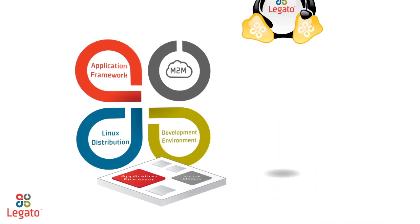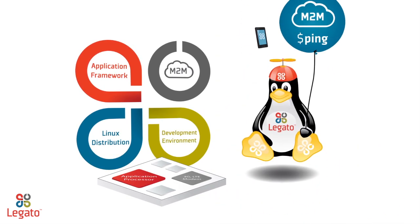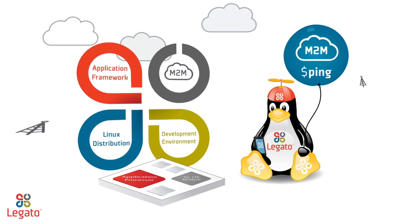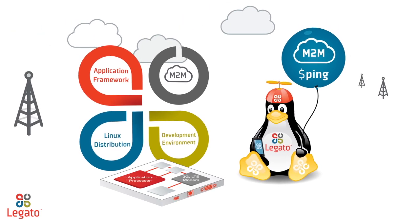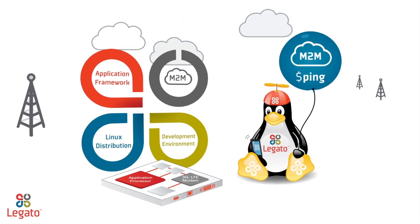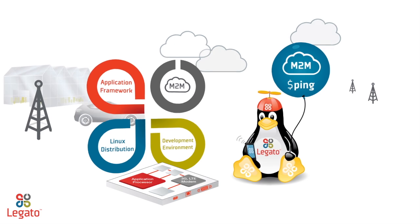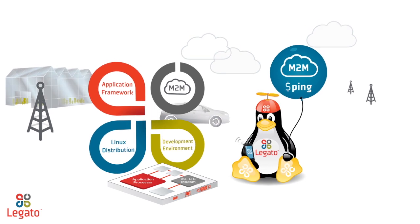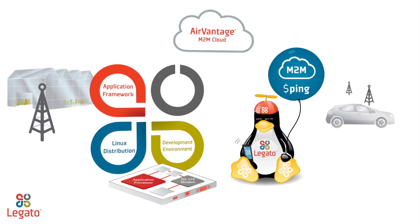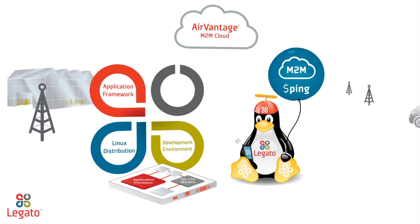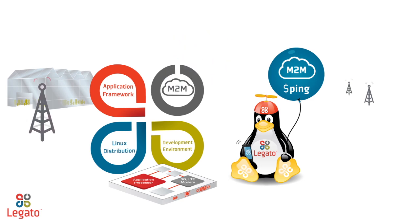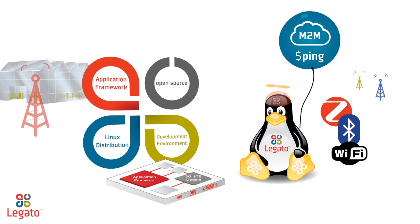Third, the Legato platform comes ready to connect to any cloud, any network, and any peripheral device out of the box. Designed for connected products, Legato seamlessly connects to the AirVantage M2M cloud, and its robust APIs connect easily to mobile networks, wide area networks, and personal area networks.